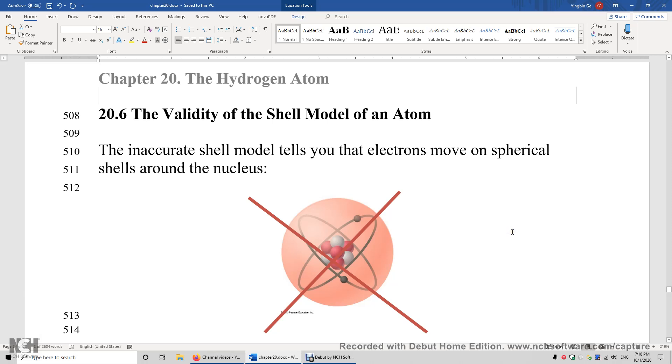Section 20.6. The validity of the shell model of an atom. The shell model is inaccurate. The shell model tells you that electrons move on spherical shells around the nucleus. This is not true.